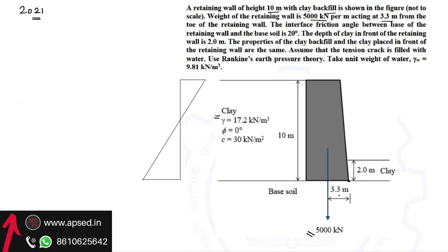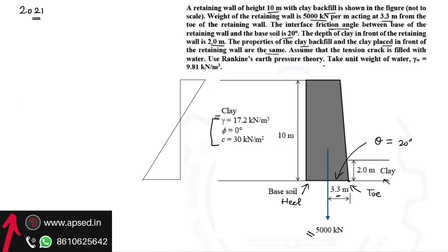The weight acts at 3.3 meters from the toe of the retaining wall. This point is the toe and the point closer to the backfill is the heel — the same nomenclature used for gravity dams. The interface friction angle between the base of the retaining wall and the base soil is 20 degrees. The depth of clay in front of the retaining wall is 2 meters, and the properties of the clay backfill and the clay in front are the same. The tension crack is filled with water.